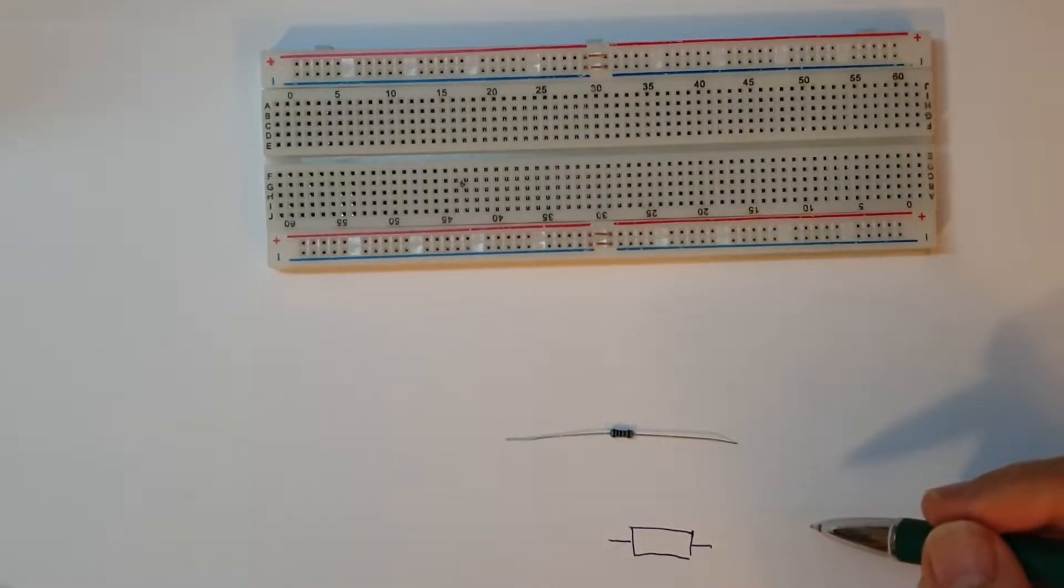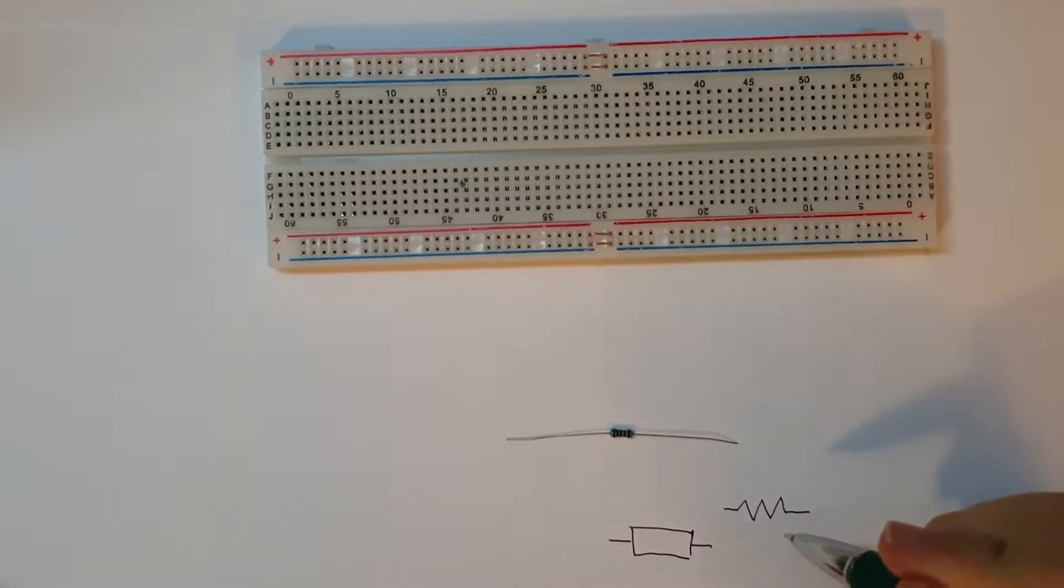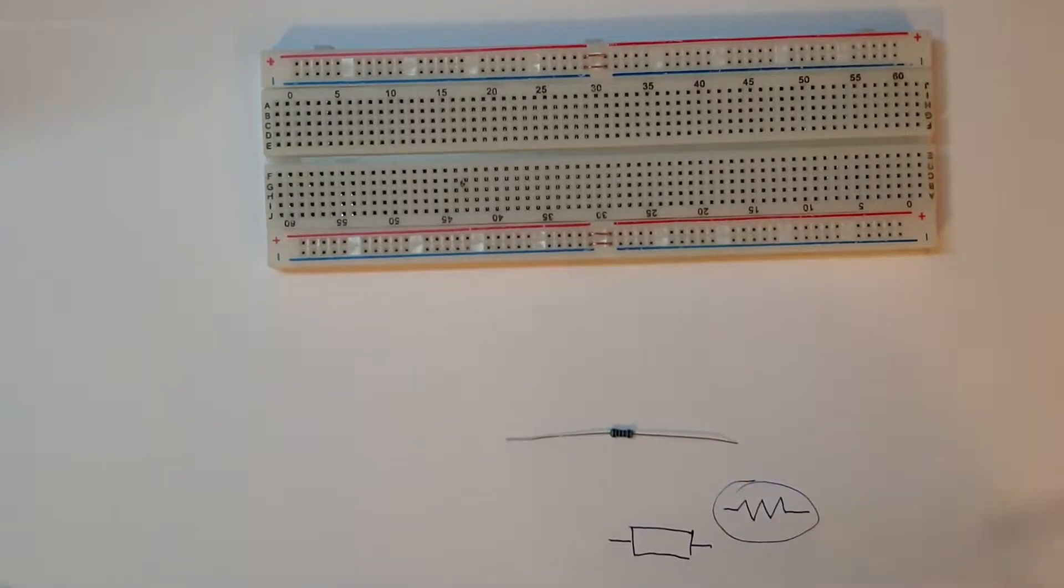But if you live in America, then the symbol is like so. Lines and more lines. If you ask me, this symbol is superior. None of this rubbish. European rubbish, no good, in this case. Unless you live in Europe, then use this.